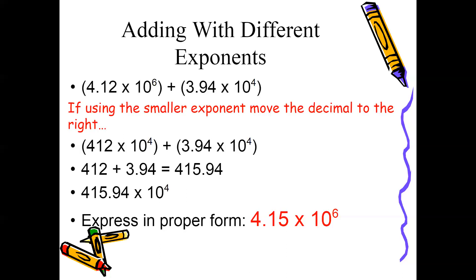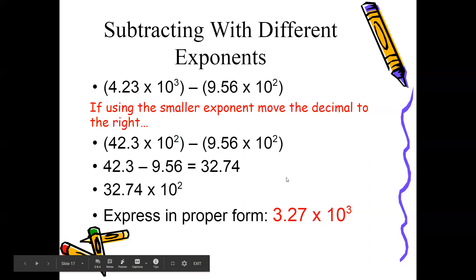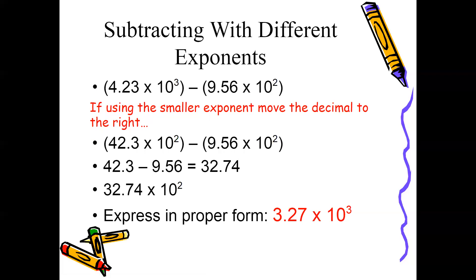The next example: 4.23 × 10³ minus 9.56 × 10². Again, we're going to use the smaller exponent. So I'm going to reduce 10 to the 3rd power to 10 to the 2nd power — going down one digit. When you go down one digit, move the decimal one place to the right. So 4.23 becomes 42.3. Rewrite the expression so both exponents are 10 to the 2nd.